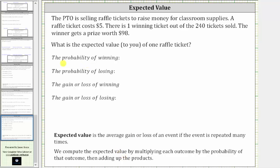Let's begin by determining the probability of winning. Because there is one winning ticket out of 240 tickets sold, the probability of winning is 1 divided by 240. Therefore, the probability of losing is one minus this value, which is 239 divided by 240. There are 239 losing tickets out of 240 total tickets.